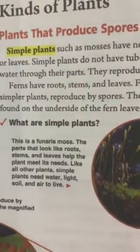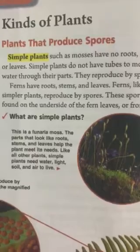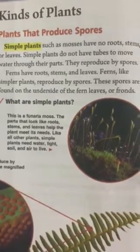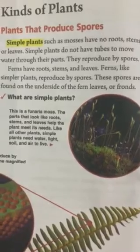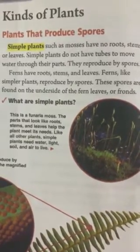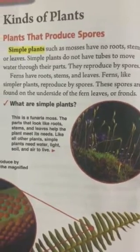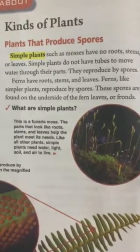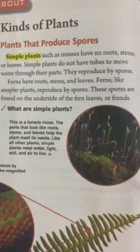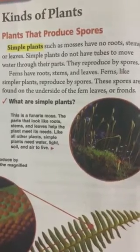Let's see plants that produce spores. First up, we have to learn about a simple plant. As we studied, simple plants are kinds of plants that don't have roots, stems, or leaves. So how do they reproduce? They reproduce by spores.